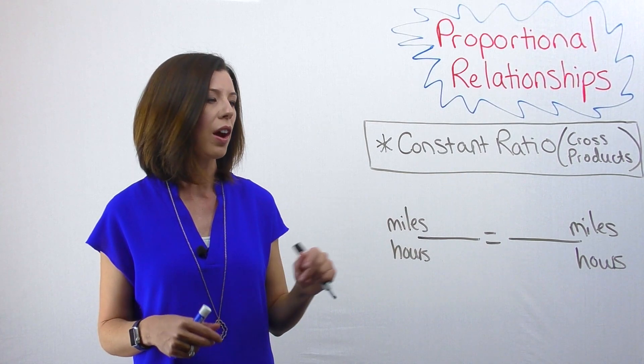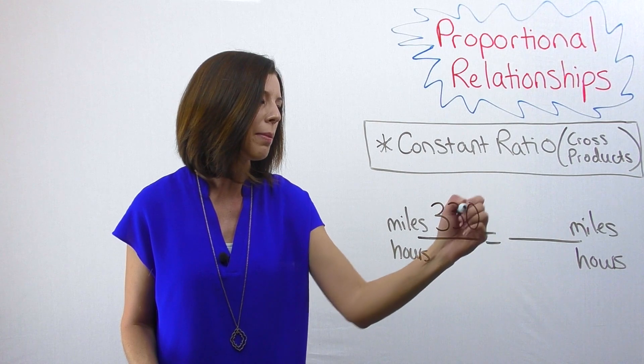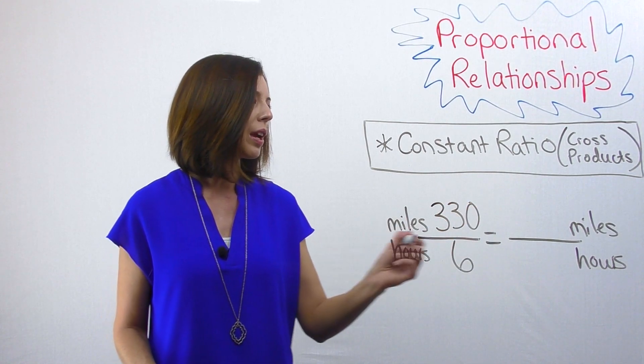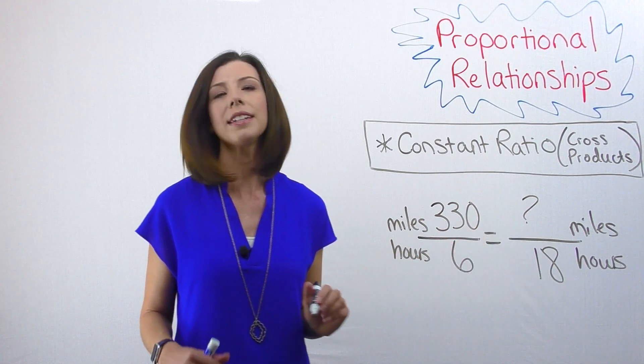Let's plug in what we know so far. So again, we know that John can travel 330 miles in six hours, and we're trying to figure out how many miles he can travel in 18 hours.